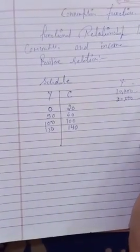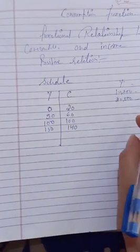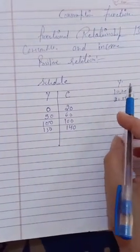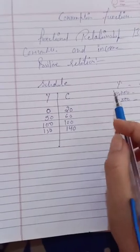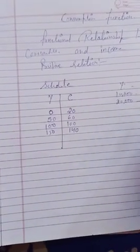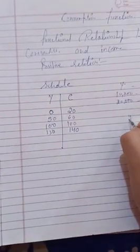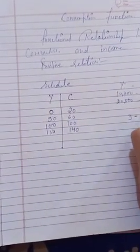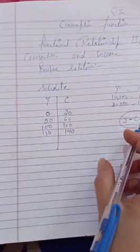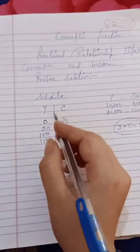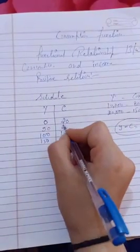The reason is human saving behavior. As income increases, the saving level also increases, and the proportion of income spent on consumption decreases. So the increase in consumption is less than the increase in income.